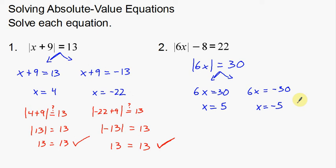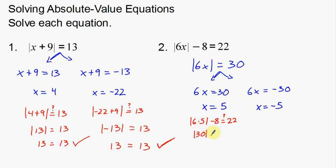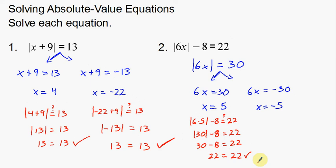Let's plug these back in to check. For x equals 5: the absolute value of 6 times 5, minus 8 — is that equal to 22? Well, 6 times 5 is 30. The absolute value of 30 is 30. So 30 minus 8 equals 22. That does work.